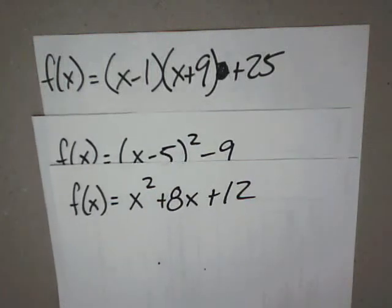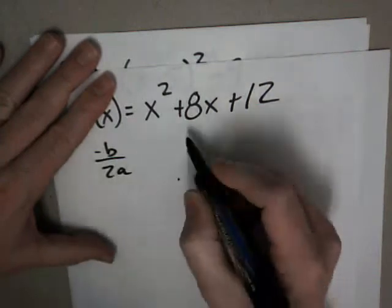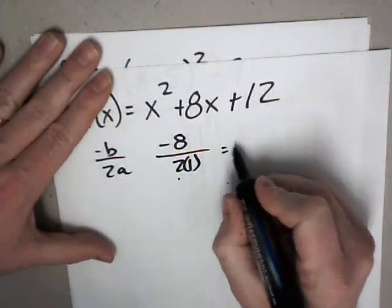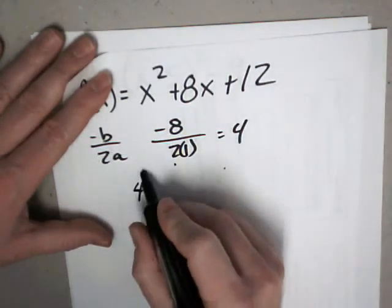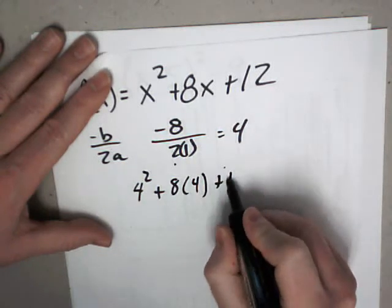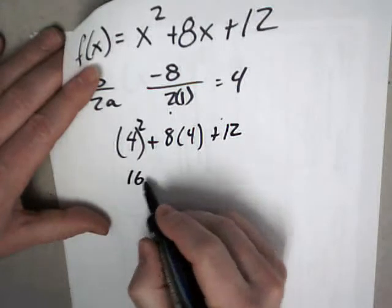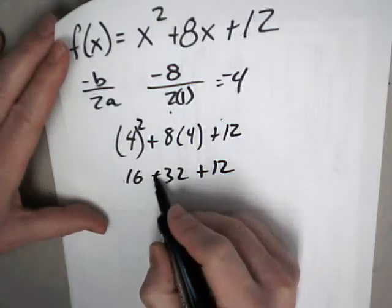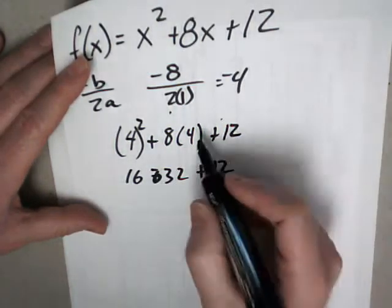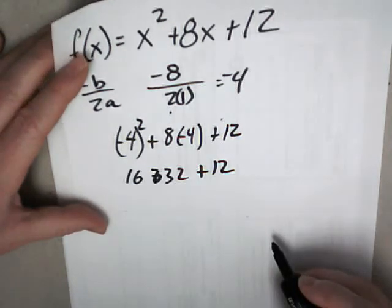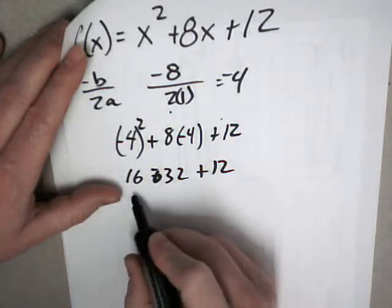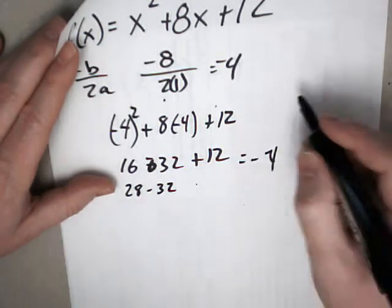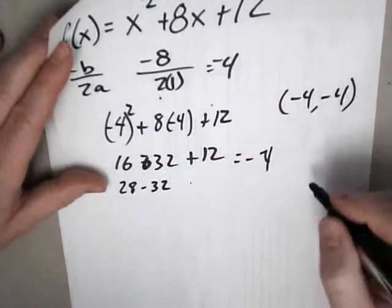So let's see. I guess we'll do these two here. Negative b over 2a. So negative b is negative 8 over 2 times 1. That's 4. Plug your 4 back in. So that's 16 plus 32 plus 12. Oh my gosh. It's negative 4. Negative 32. Okay. So that would be 28 minus 32. So it's 4, negative 4.